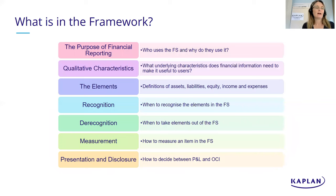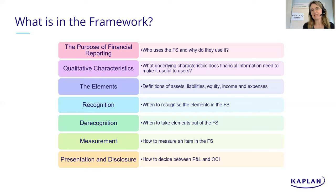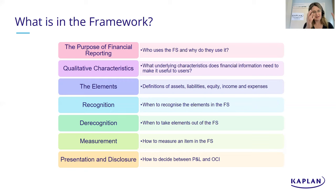There are seven different parts of the framework - there's actually an eighth, capital maintenance, but it doesn't feature highly in ACCA or CIMA syllabuses, so we won't cover it here. The seven main parts are: the purpose of financial reporting, qualitative characteristics, the elements, recognition, de-recognition, measurement, and presentation and disclosure.